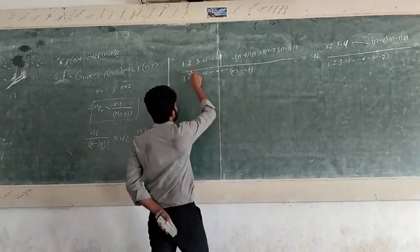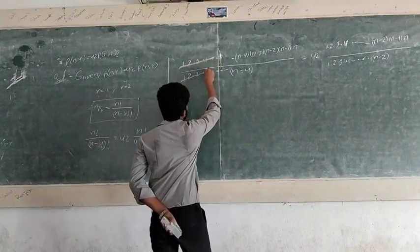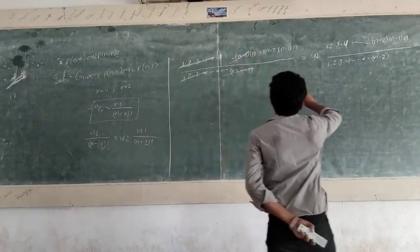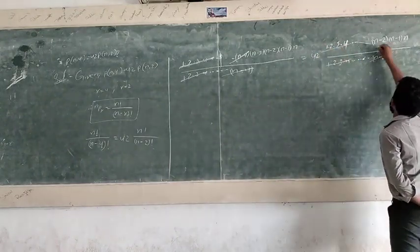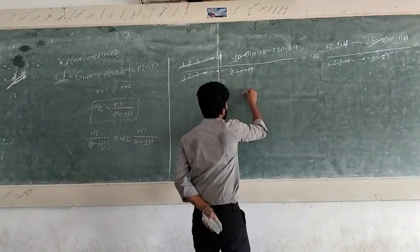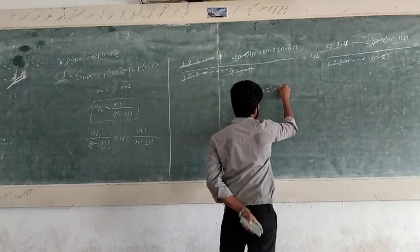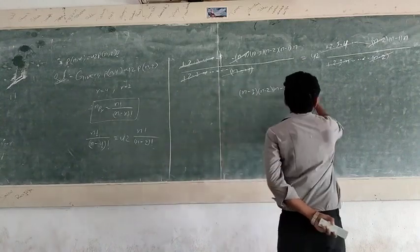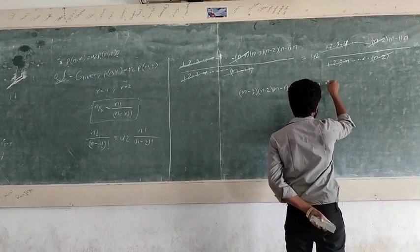We can cancel 1 × 2 × 3 × 4 on both sides, and cancel (n − 4) here, and (n − 2) on the other side. The remaining terms give (n − 3)(n − 2)(n − 1) × n = 42 × (n − 1) × n.